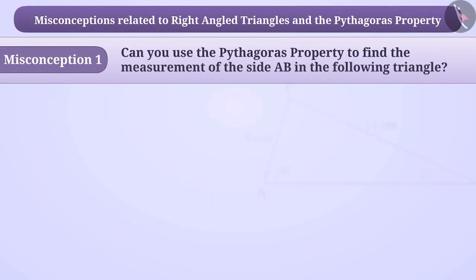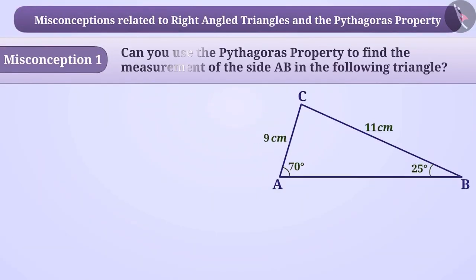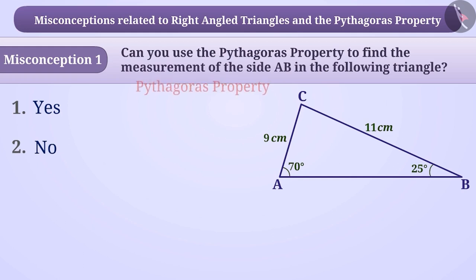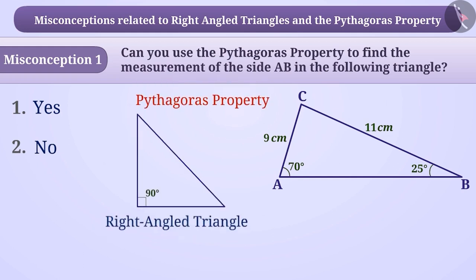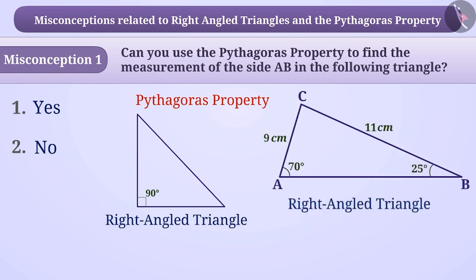Misconception 1: Can you use the Pythagoras property to find the measurement of side AB in the following triangle? Some children ignore the fact that the Pythagoras property can be used only for right-angled triangles. This property cannot be used if the triangle is not a right-angled triangle.